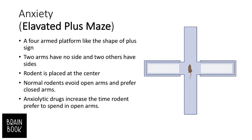Another test that assesses anxiety is the elevated plus maze. It is a four-armed platform shaped like a plus sign. Two arms have no sides and two others have sides, as you can see here. The rodent is placed at the center and a normal rodent avoids open arms and prefers closed arms. Rodents tend to go to the covered side rather than open fields. Anxiolytic drugs increase the time rodents spend in open arms. This test is called the elevated plus maze and it measures the anxiety level of the animal.